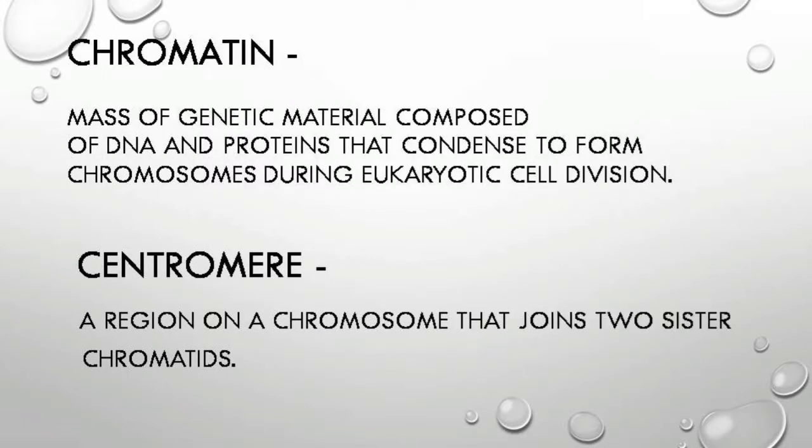Chromatin: a mass of genetic material composed of DNA and proteins that condenses to form chromosomes during eukaryotic cell division. Centromere: a region on a chromosome that joins two sister chromatids.